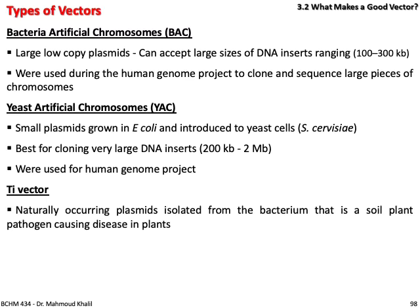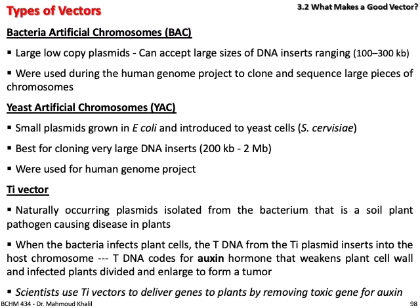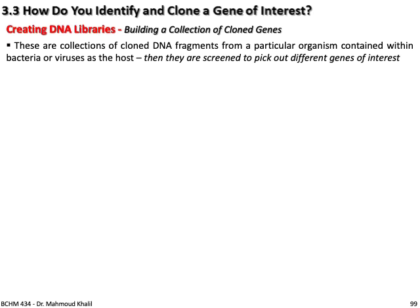Ti vector: a naturally occurring plasmid isolated from a soil plant pathogen bacteria that causes disease in plants. When bacteria infect plant cells, the T-DNA from the Ti plasmid inserts into the host chromosome. T-DNA codes for an important plant hormone called auxin, which weakens the plant cell wall, causing infected plant cells to divide and enlarge to form a tumor. Scientists use Ti vectors to deliver genes to plants by removing the toxic auxin genes. Ti vector is the only one of these vector types used to introduce DNA into plants.